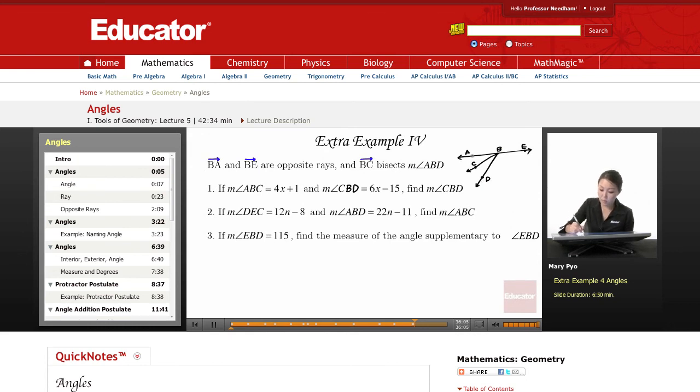Okay, so that means this is a line, right, because they're opposite rays. BC bisects this angle ABD, that means since it bisects it, they are the same measure, they're equal.